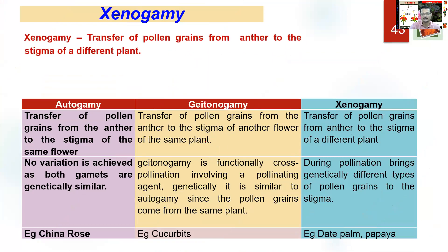Let's differentiate all three. Autogamy — example could be China rose. Variation won't be much; gametes will be genetically similar. Geitonogamy — it can take place in China rose too, but it is basically seen in cucurbits. Cucurbit flowers are unisexual. They are monoecious — male flower and female flower are both on the same plant — so the possibility of transfer of pollen within the same plant but between different flowers takes place. Cucurbits is the example of geitonogamy.